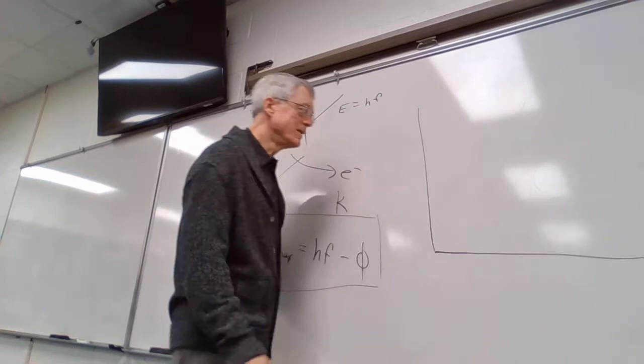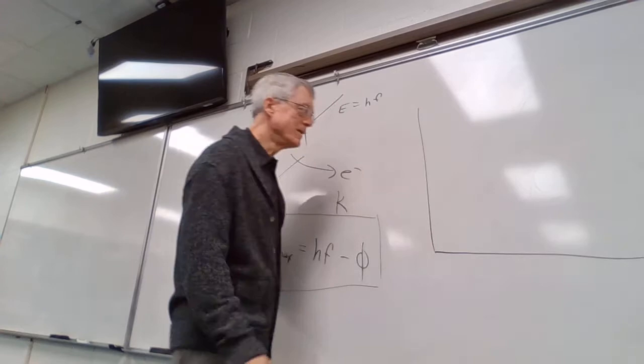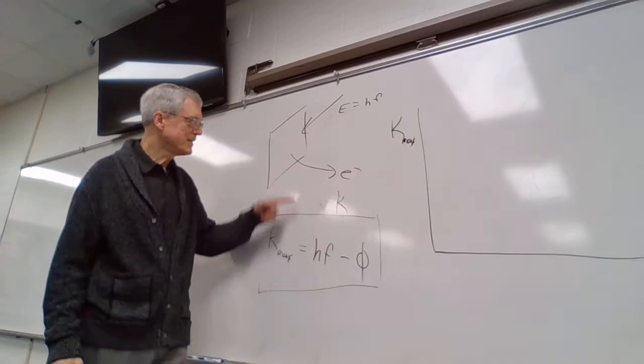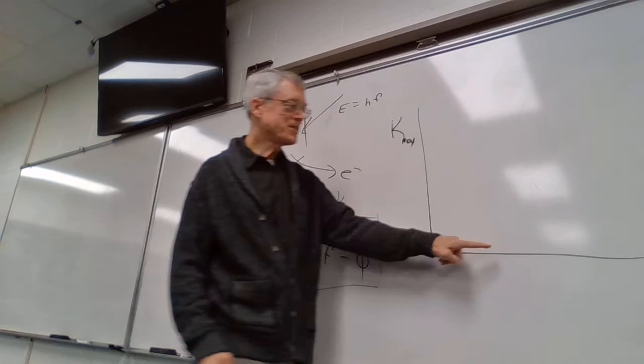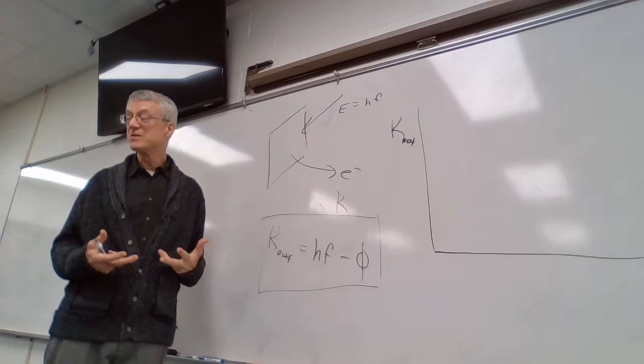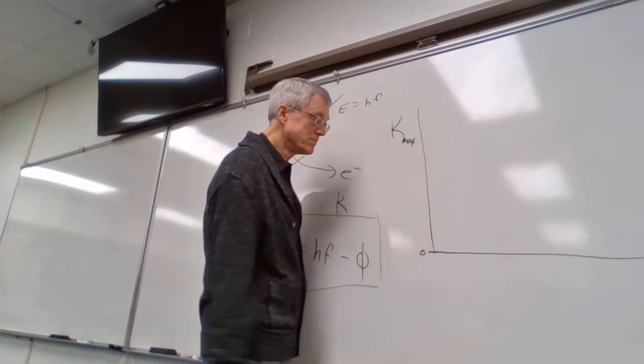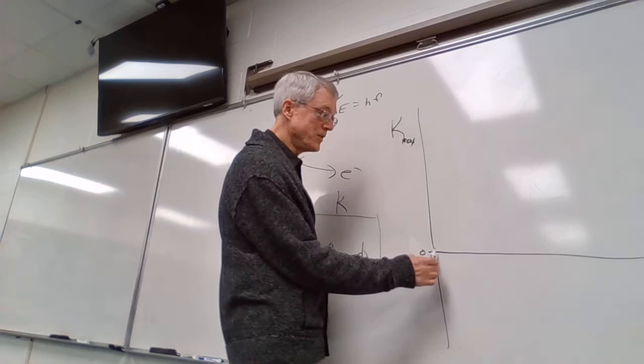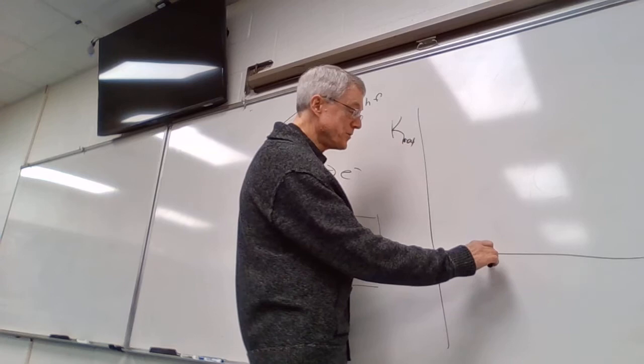Let's do the graph first, because I only mentioned it at the end of the period yesterday. If this is K-max — maximum kinetic energy of the electrons as they come out — on the y-axis, and on the x-axis we put the frequency of the incoming light, we'd get a straight line. It would start over here somewhere and be slanted up like that.